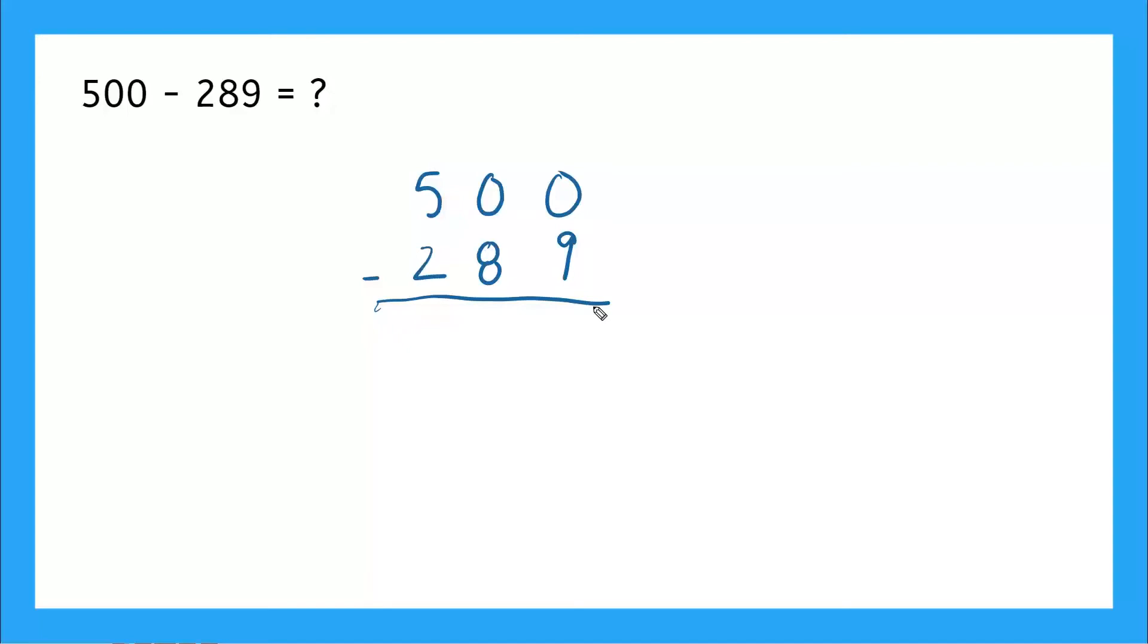So right away, what are we going to do? Yeah, we're starting in our ones column, but we have zero minus nine, which we definitely can't do. So we need to borrow.